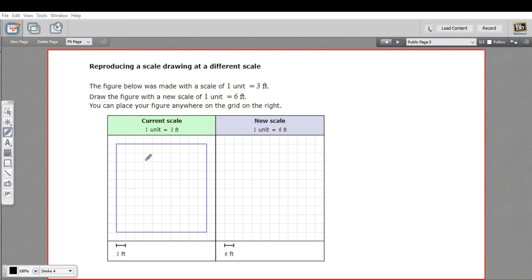In this problem we have an object that's been drawn at a scale. In this case, one unit on this grid is three feet in the real world, and we want to draw the same object but at a different scale, in this case where one unit equals six feet.